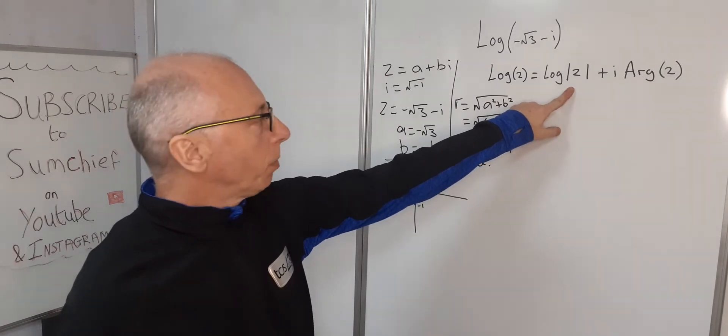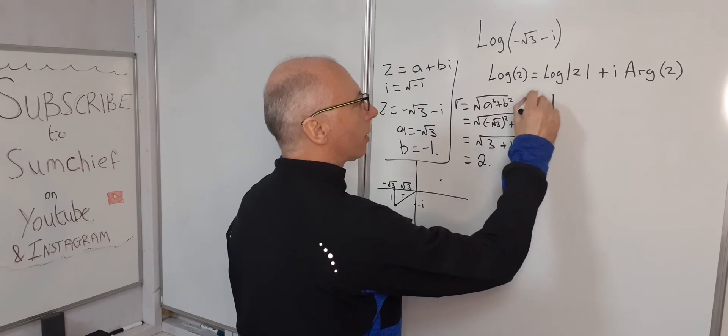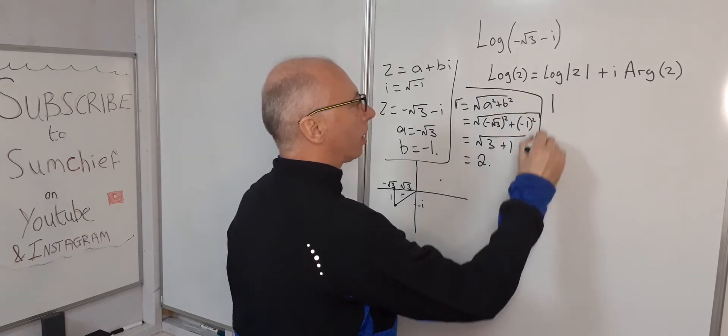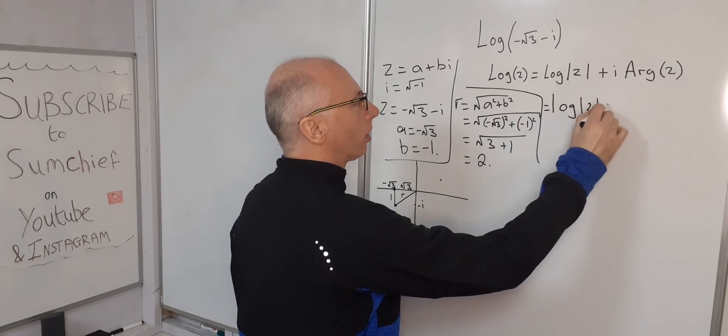which is basically 2. So therefore, the first part we can put in already. So let's just write it down. So this equals the log of 2 plus i.